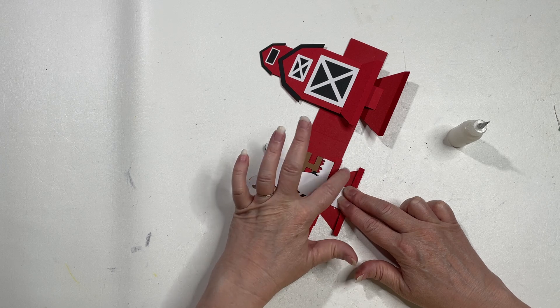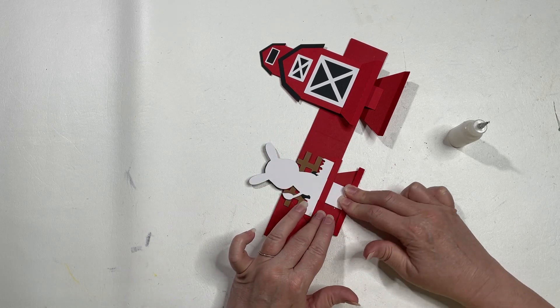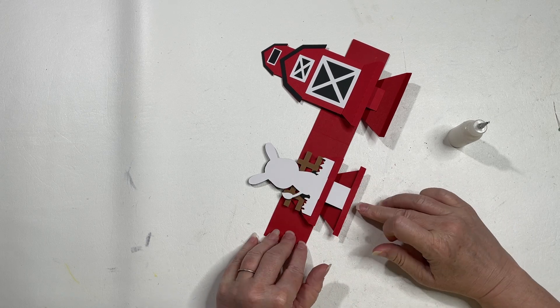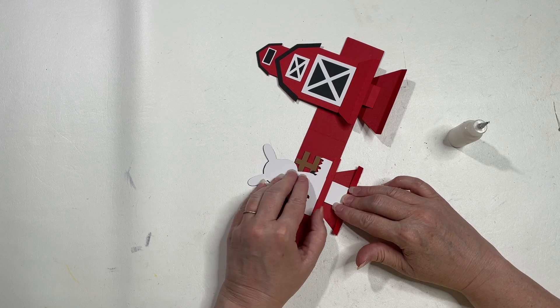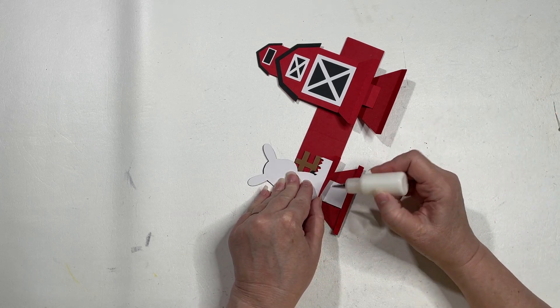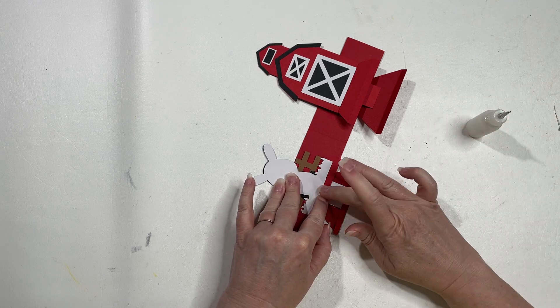Being careful not to get glue down on the base of the card because we don't want to glue it shut. And then we have to lift up this tab and apply glue underneath and glue this also to the donkey.